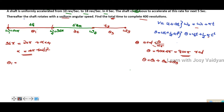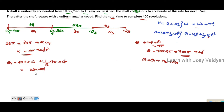The angular displacement in Stage 1 is computed. Using the kinematics formula, the number of revolutions in Stage 1 gives us 112.5 radians. In Stage 1, the displacement theta 1 is 112.5 radians.